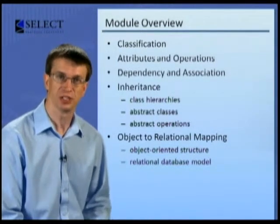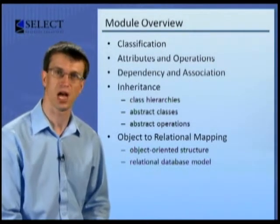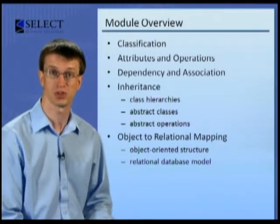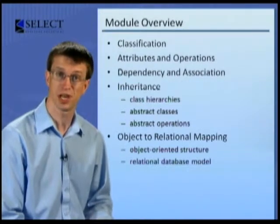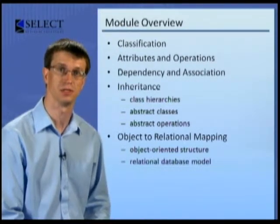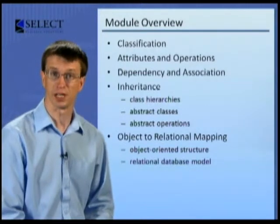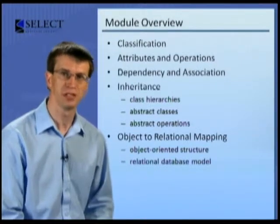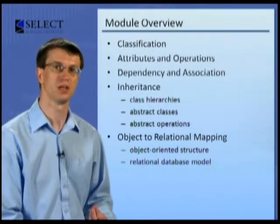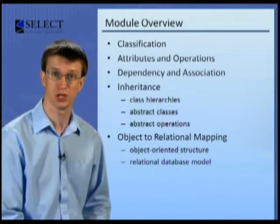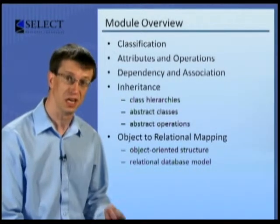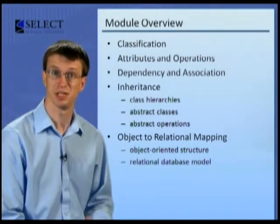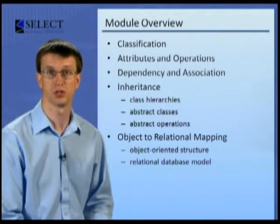In the session on attributes and operations, we look in detail at how we modelled the characteristics and behaviour of a class, identifying the properties that may be used to describe them, and how their visual representation varies according to the values of those properties. Objects would have limited use if they could not refer to other objects, so the session on dependency and association helps us to understand the provision made in UML for modelling the relationships between classes, which result in links between objects. The various types of relationship will be examined in depth, and we'll highlight the notational specifics of each.